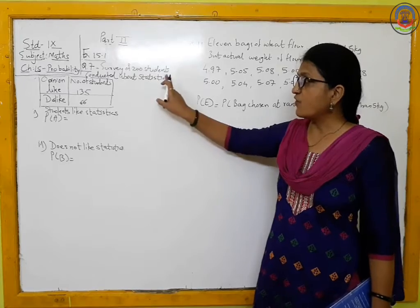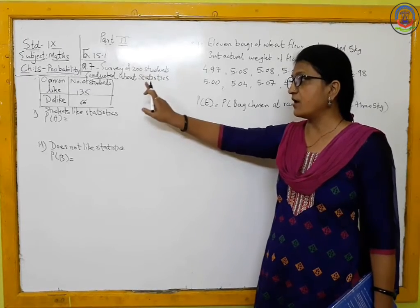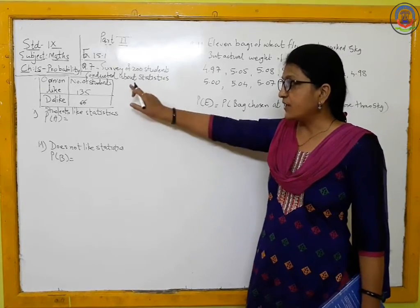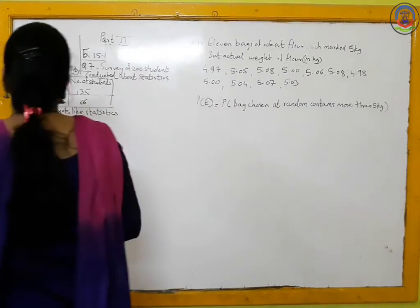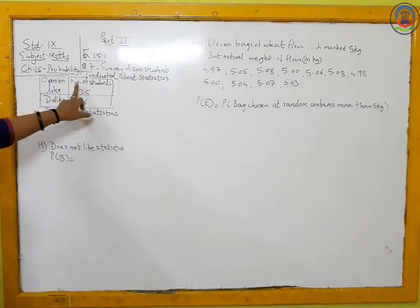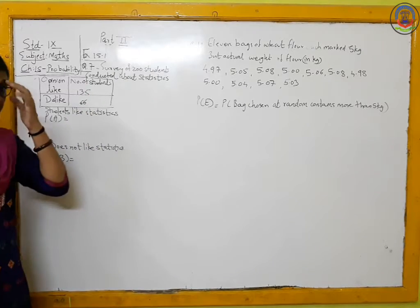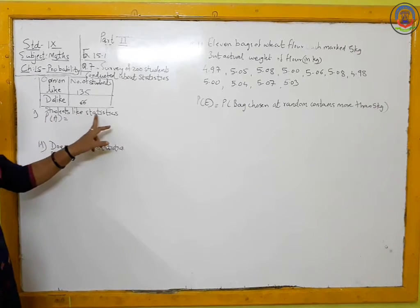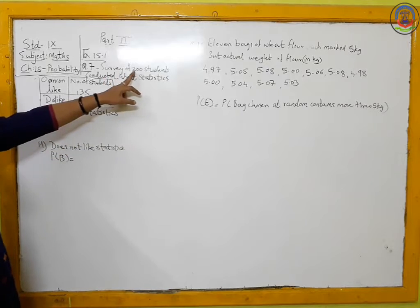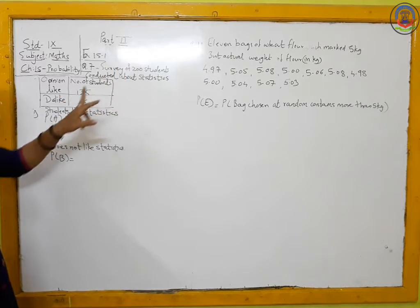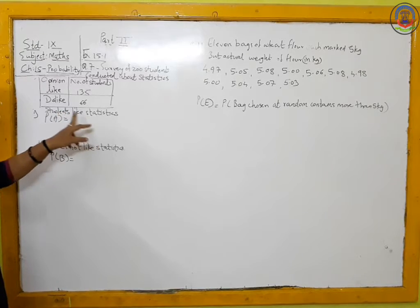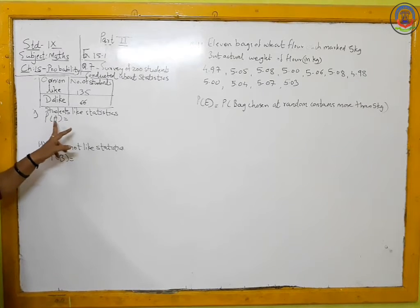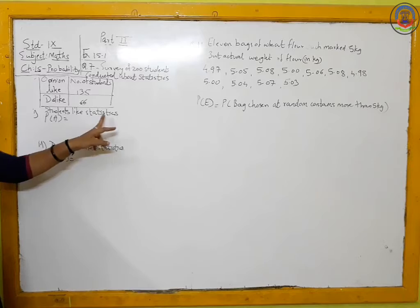Question number 7: a survey of 200 students on whether they like statistics. So the total number of trials is 200. Out of that, 135 students like statistics while 66 students don't like statistics. We have to find the probability of the event where students like statistics. We denote this as P(A), where P(A) denotes the probability that a student likes statistics.